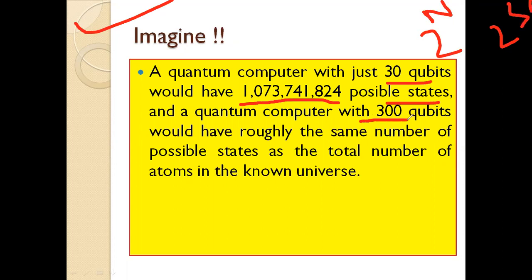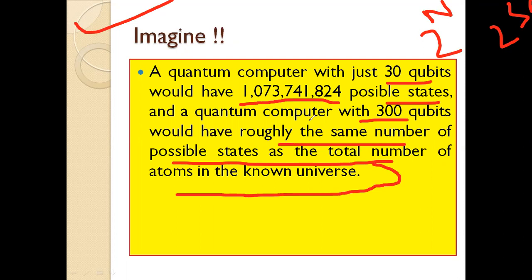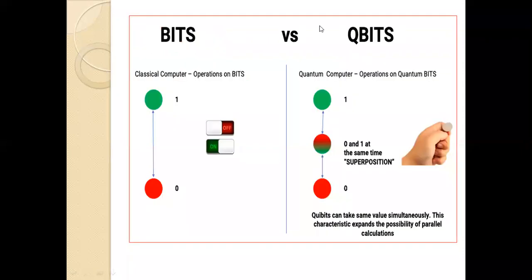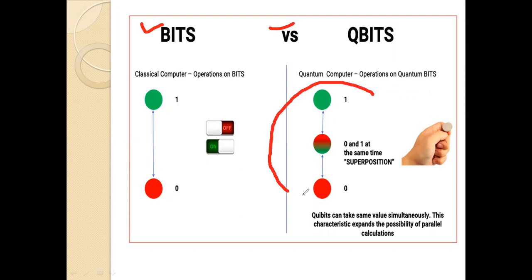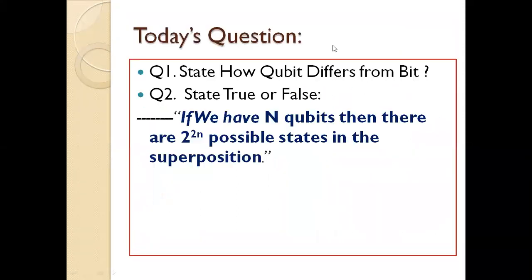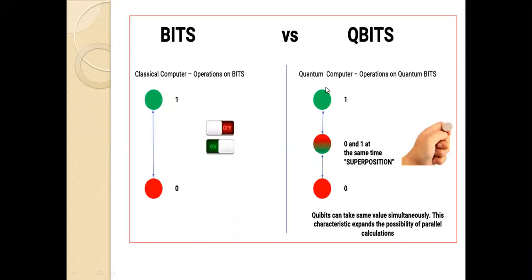If a quantum computer has 300 qubits, it would have roughly the same number of possible states as the total number of atoms in the entire known universe. That is the power of a quantum computer. A classical bit is zero or one — on or off — but a qubit can be zero, one, and zero-and-one simultaneously during superposition. This characteristic expands the possibility of parallelism and parallel calculations enormously.